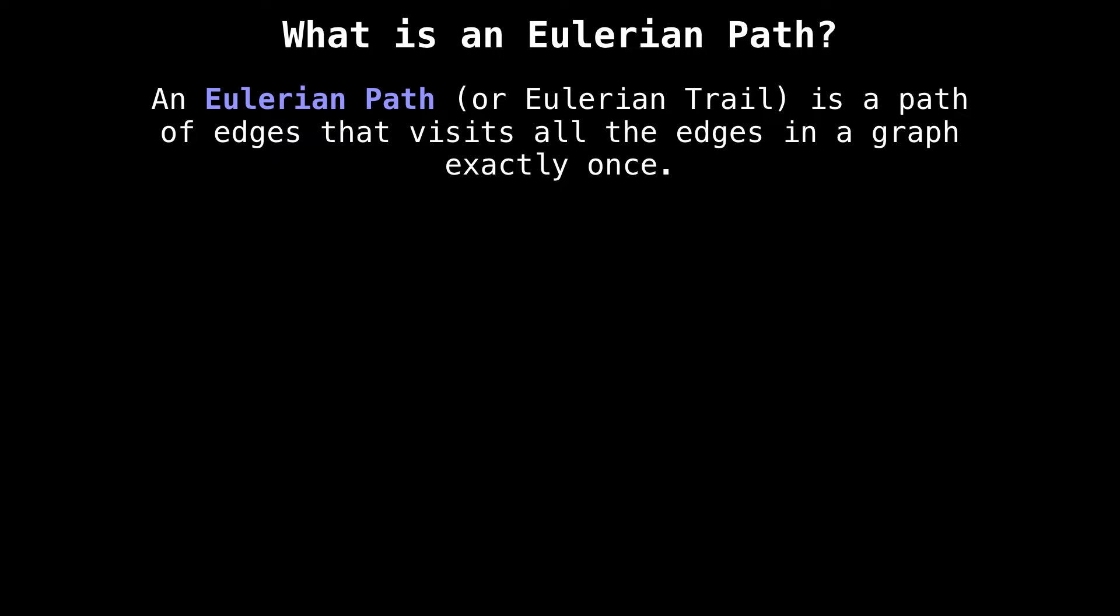Let's begin with what an Eulerian path is. An Euler path, also called an Eulerian trail, is a path of edges in a graph that visits every edge exactly once.